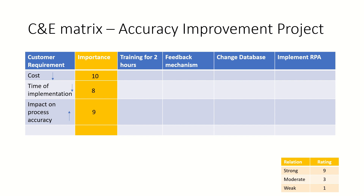Training for two hours is a cost-effective solution, so lower the cost, higher the rating — which is nine. For time of implementation, you only need a trainer, a training room, and participants; it is easy to implement and will take less time, so the rating scale is nine. Impact on process accuracy would be very high, so there is a strong relationship and nine is given. The overall score is 10×9 + 8×9 + 9×9 = 243.